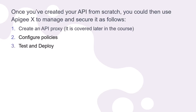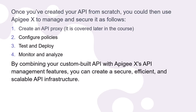Test and deploy the API proxy in the desired environment in Apigee. Then monitor and analyze using Apigee's analytics features to monitor the performance, usage, and security of your API. Continuously analyze the data to identify areas of improvement and optimization. By combining your custom-built API with Apigee's API management features, you can create a secure, efficient, and scalable API infrastructure.